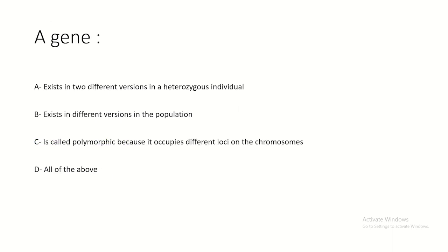A gene exists in two different versions in a heterozygous individual. Two different alleles for the same gene can exist in different versions in the population. A gene is called polymorphic when there are different alleles for the same gene, each with at least 1% presence in the population - not because it occupies different loci on the chromosome.